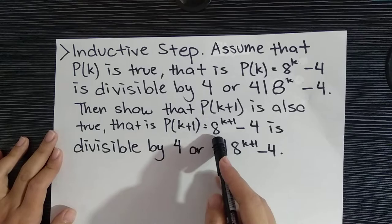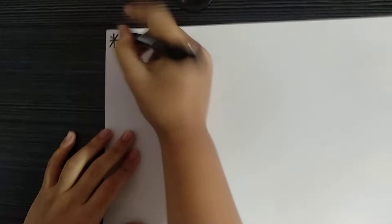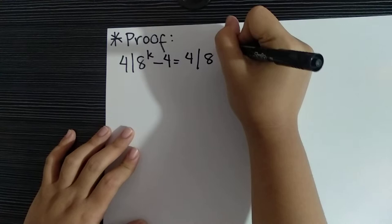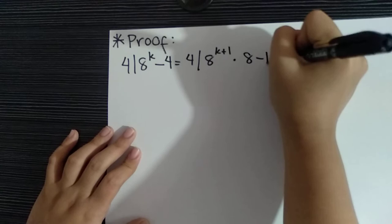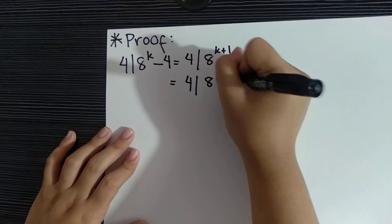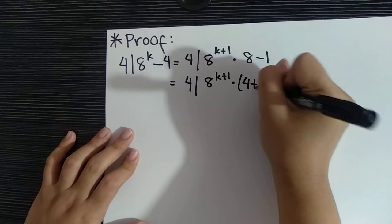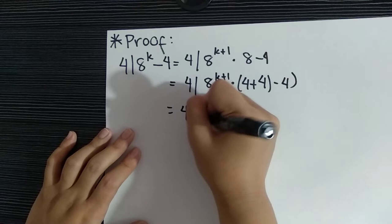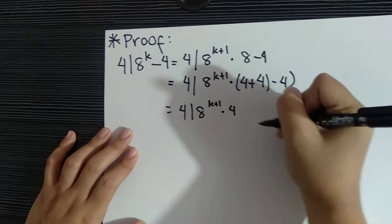We write this as 4 | 8^(k+1) - 4, which we can rewrite as 8 times 8^k minus 4.